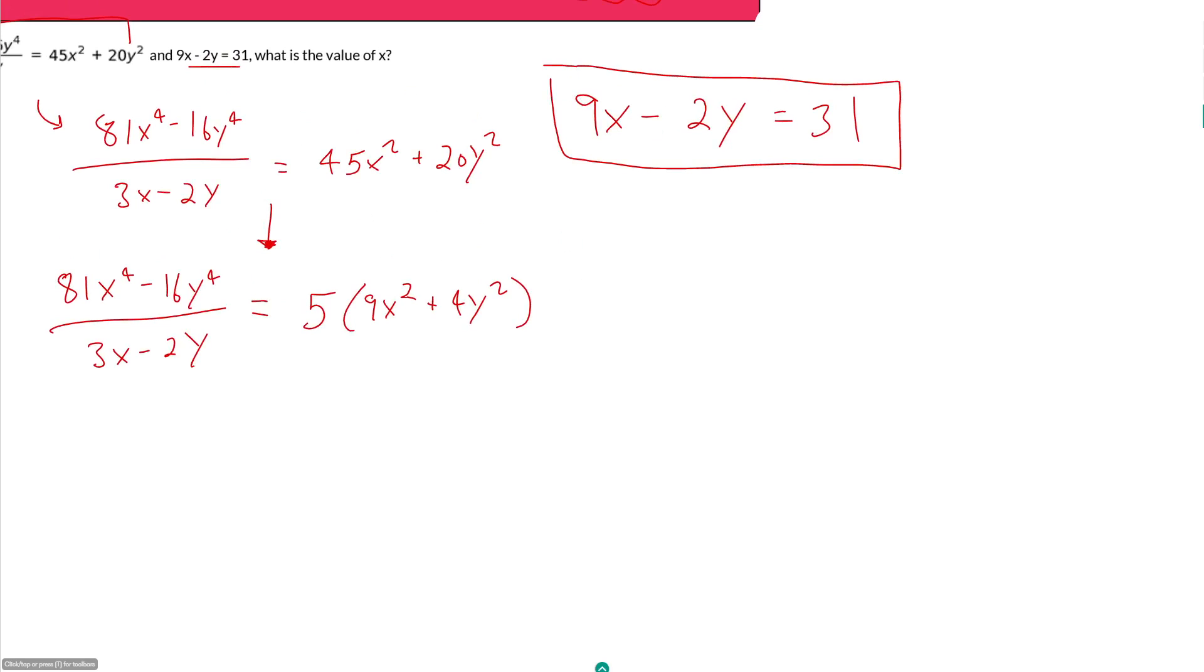Because anytime that you have an even power, you can express it as a square. So x to the 4th is really just x squared squared. And x to the 6th is really just x cubed squared. And x to the 8th is really just x to the 4th squared.